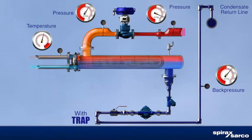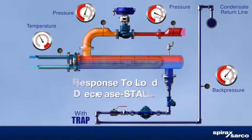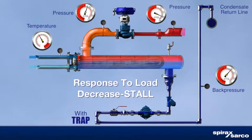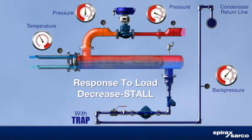This happens in all heat exchangers, whether properly sized or oversized. This causes condensate to flood the steam space, known as heat exchanger stall. In other words, the pressure in the heat exchanger is equal to, or less than, the total back pressure imposed on the steam trap, sometimes even attaining vacuum.